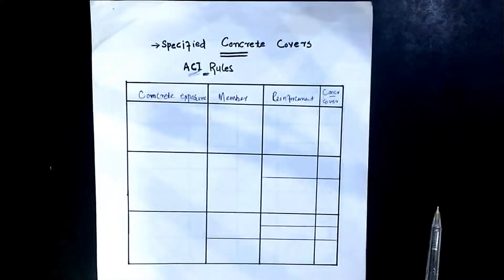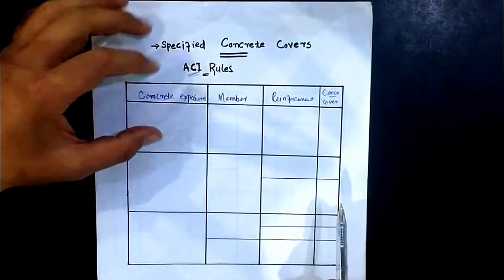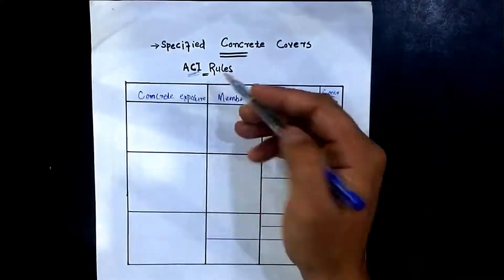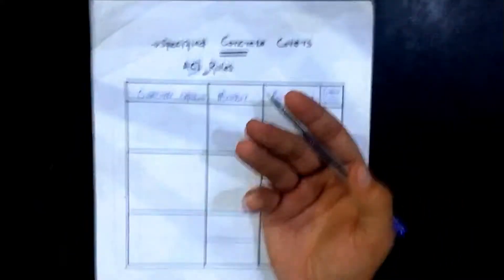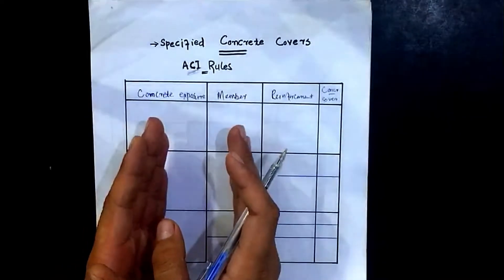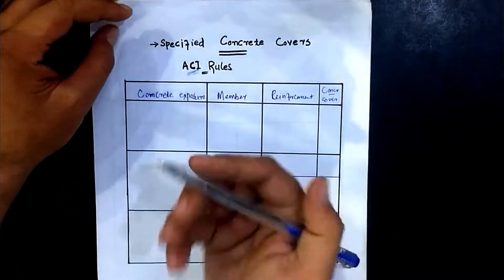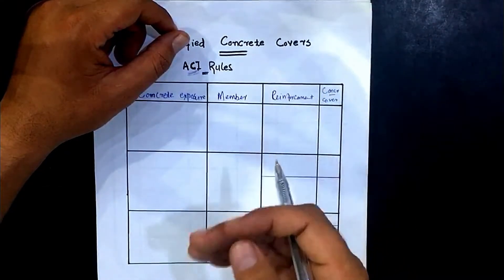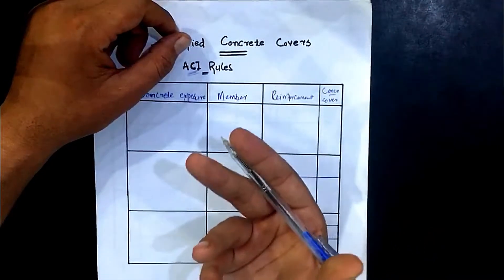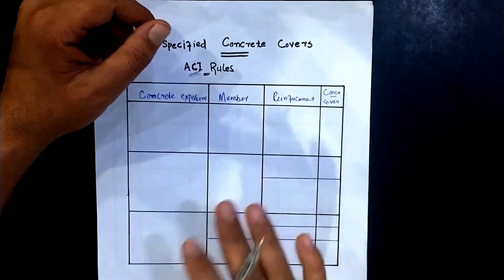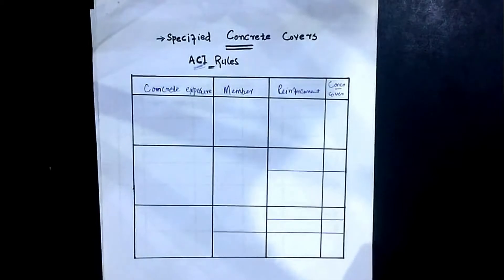Today I will be talking about the ACI — American Concrete Institute — rules that have been given for specified concrete cover. The concrete cover does not only depend upon the exposure type, but also depends upon the members: the slab, the column, the beam, the foundation. Exposure type means whether the structure is in open atmosphere, a concrete-retaining structure, or somewhere in high heat.